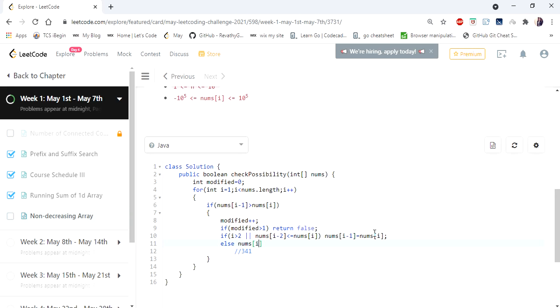So nums[i] is equal to nums[i-1]. Once this is done the number going to become 3, 4, 4 so if at none of the cases the value returned false then finally we are going to return true.